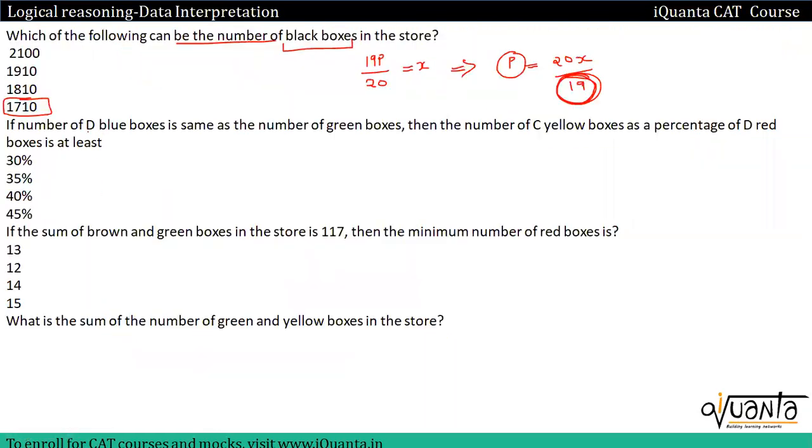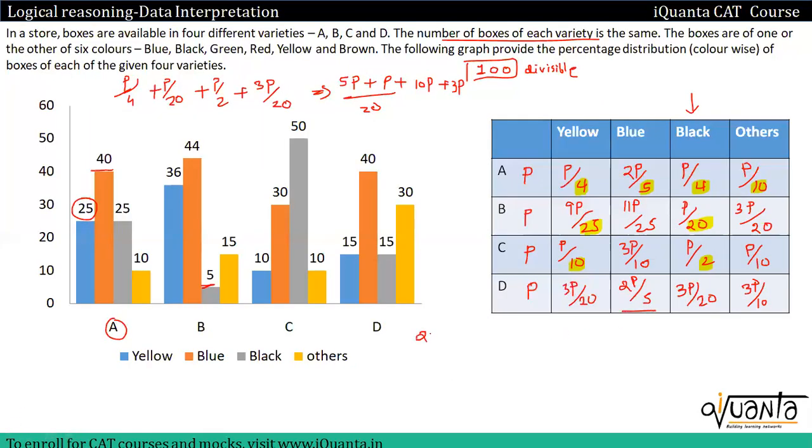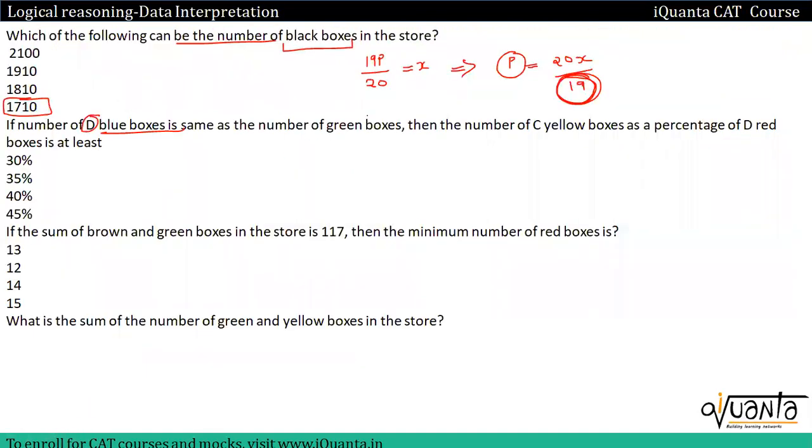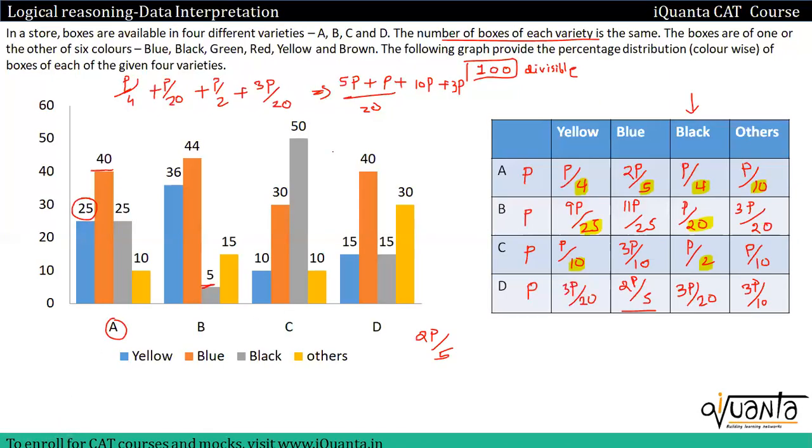Next question. If the number of D blue boxes, D blue boxes are 2P/5. If same as the number of green boxes. Now this is not a particular variety. The colors are yellow, blue, black, then green, red and yellow. So others in my case are green plus red plus brown. Green plus red plus brown. And others in my case total how much will be? Total 10 common 2, 3, 6, 2, 8, 2, 10. 13P/20. This is my others' value.